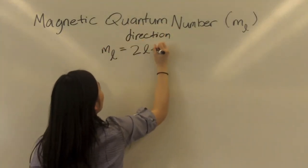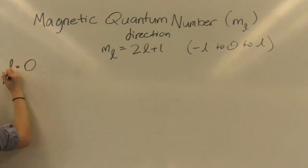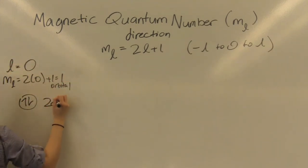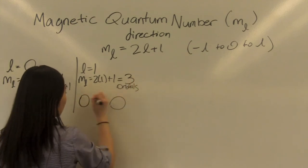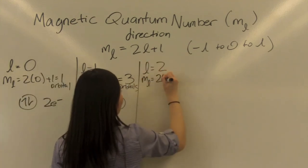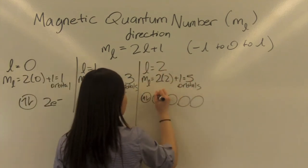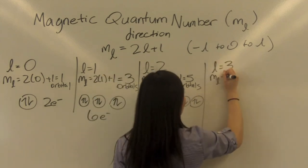The magnetic quantum number describes the direction or orientation of the orbital of a given energy and shape. This value depends on the angular momentum quantum number. It can hold any integer value from negative L to zero to L.